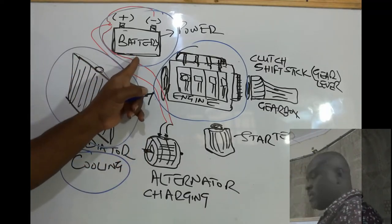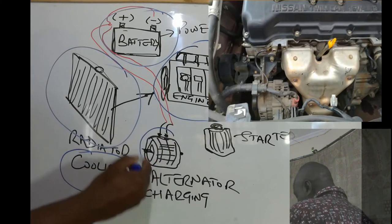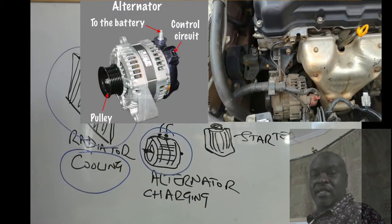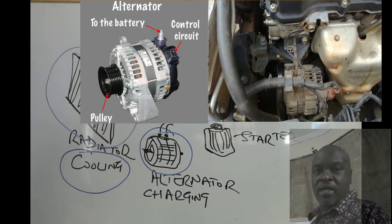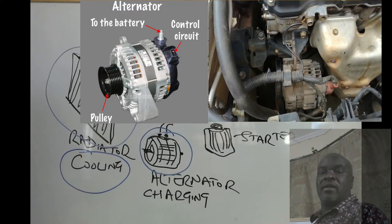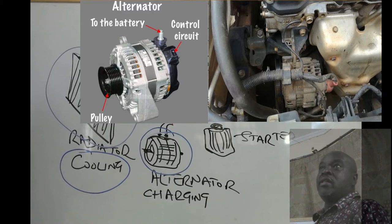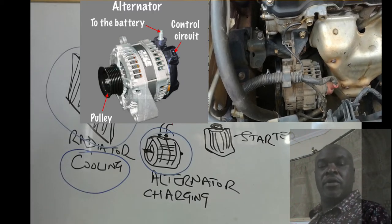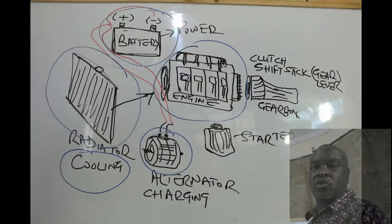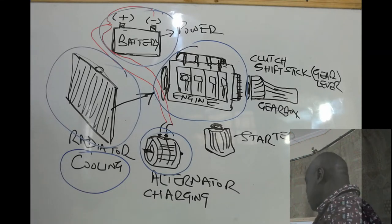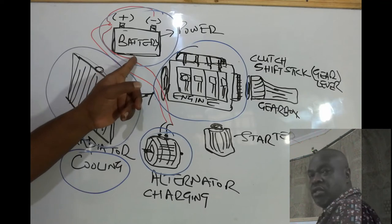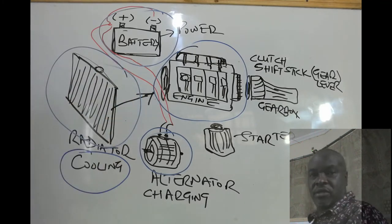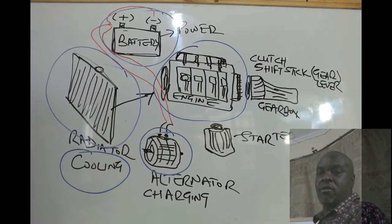Having looked at the battery, we have the alternator. The work of the alternator is to recharge the battery — to generate power which recharges the battery. When the car is in motion, the alternator produces power that is sometimes consumed directly by the engine. So the alternator's main work is to charge the battery.